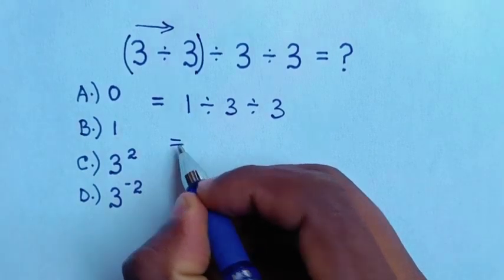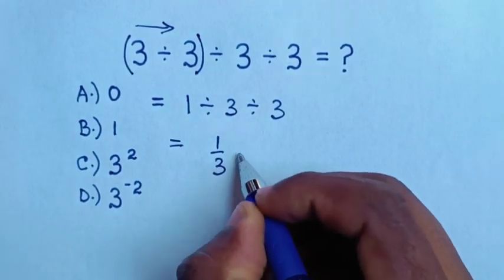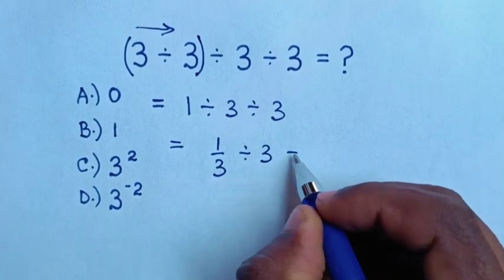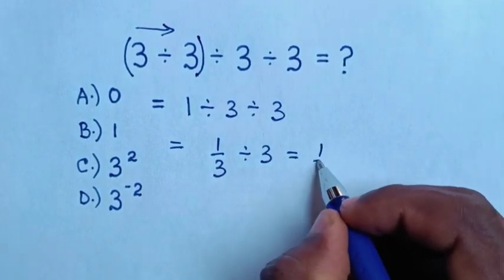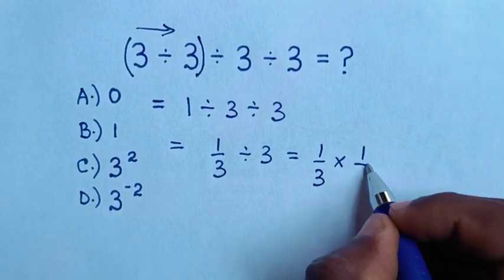So it will be equal to 1 divided by 3 is same as 1 over 3, then divided by 3, which is equal to this 1 over 3, then divided by 3 is same as times 1 over 3.